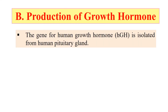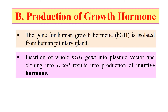Now let's discuss the production of growth hormone as one more example. In the case of growth hormone, the gene for human growth hormone was isolated from the pituitary gland. However, insertion of the whole growth hormone gene into a plasmid vector and cloning into E. coli results in a biologically inactive hormone. This is because bacteria can translate regions of genes that are not translated in humans, thereby producing a pre-hormone containing an extra 26 amino acids, which might be difficult to remove.